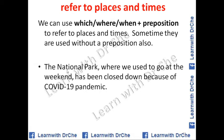Here 'the national park' is a place, and we are using 'where' — 'where we used to go at the weekend'. This is a non-defining relative clause. If we remove this clause, the other sentence is still a complete and meaningful sentence. So this is extra information — this is non-defining — and we put a comma before and after a non-defining relative clause. We are using 'where' as the pronoun when referring to a place or time.